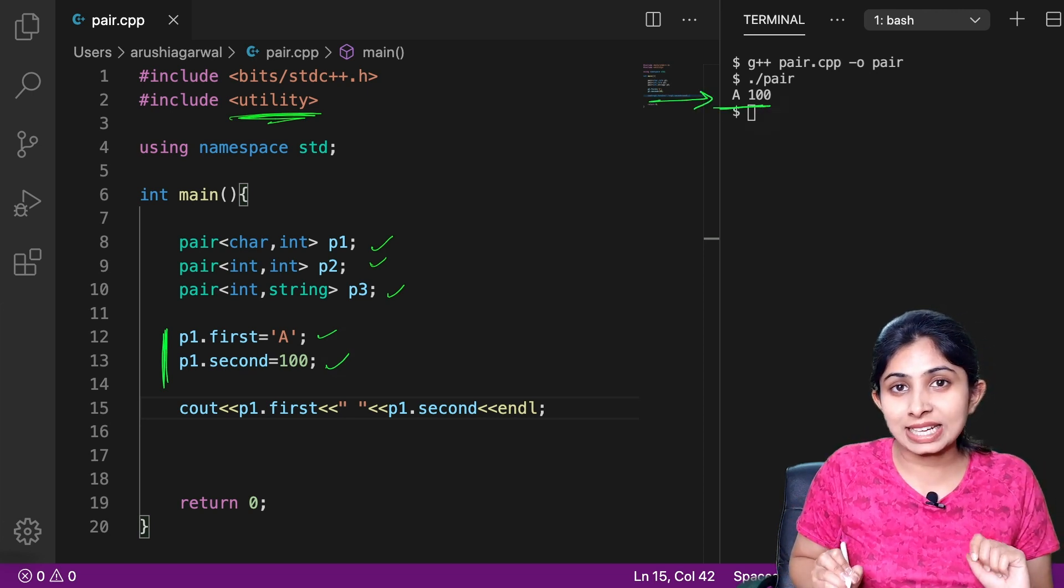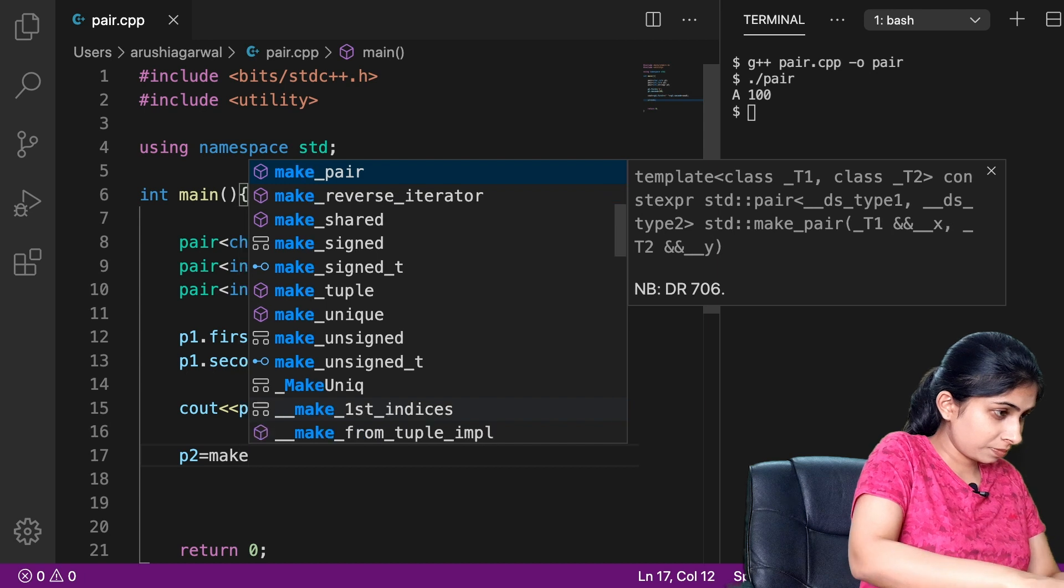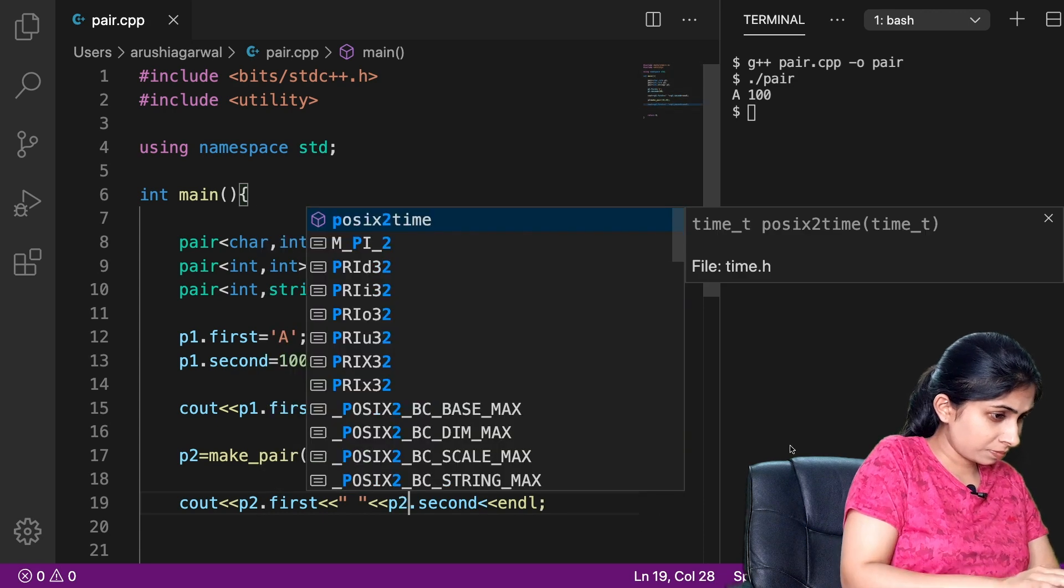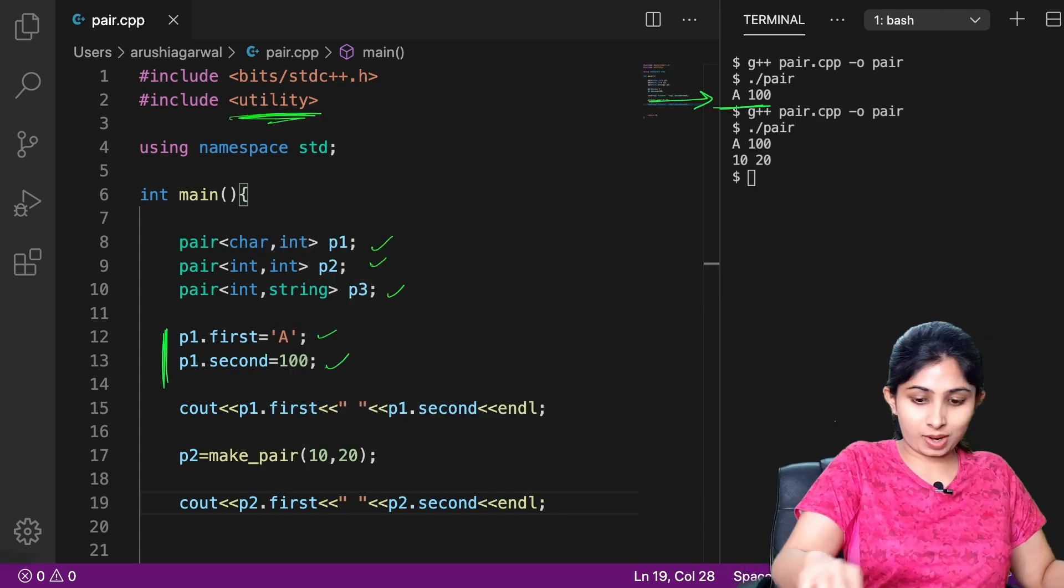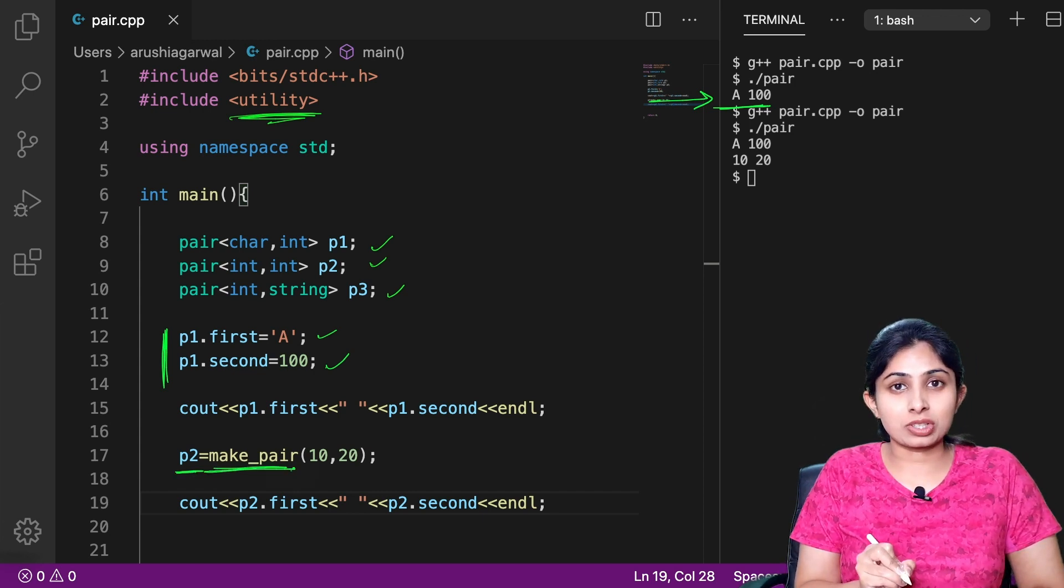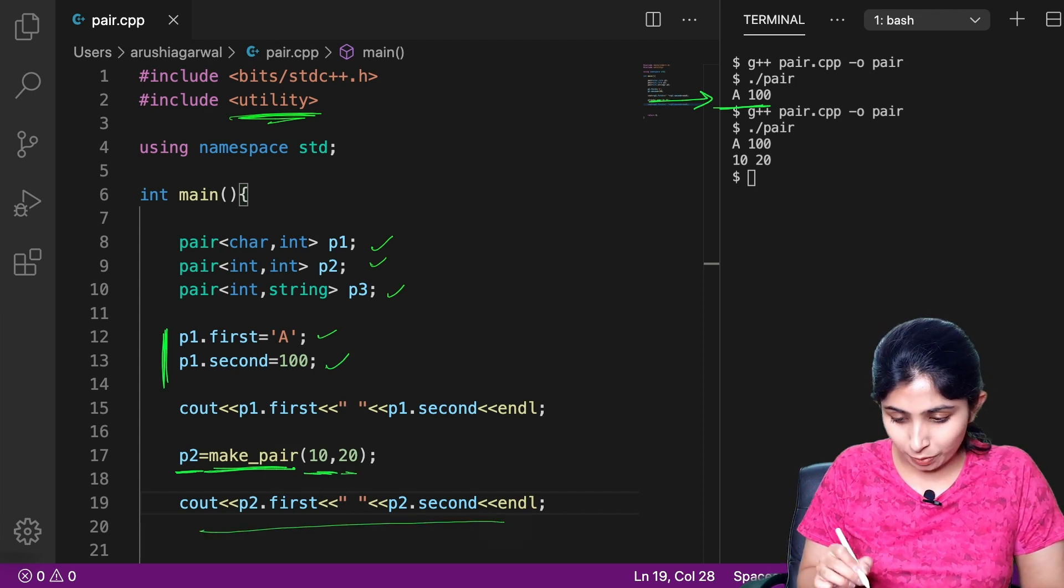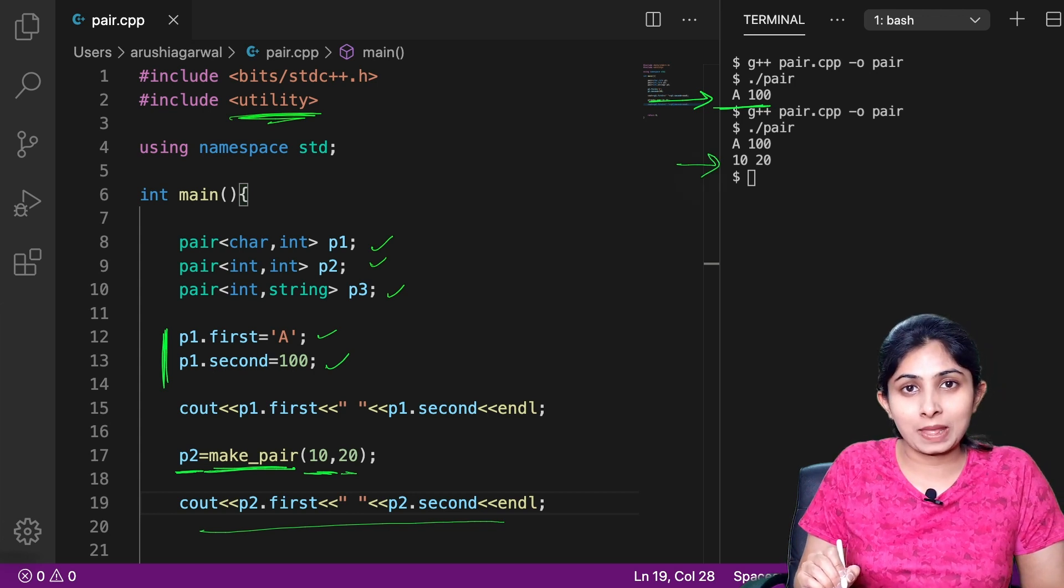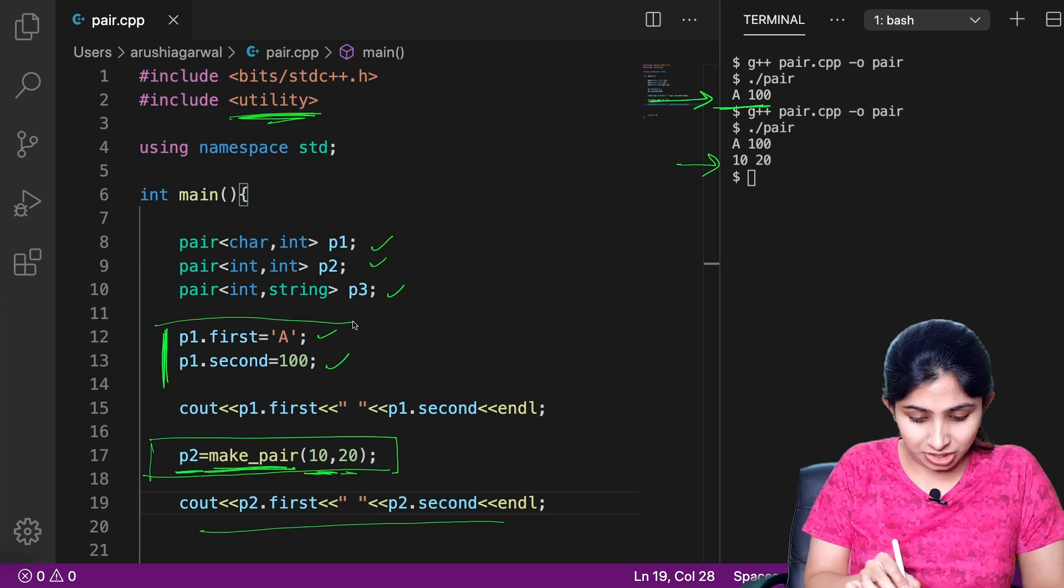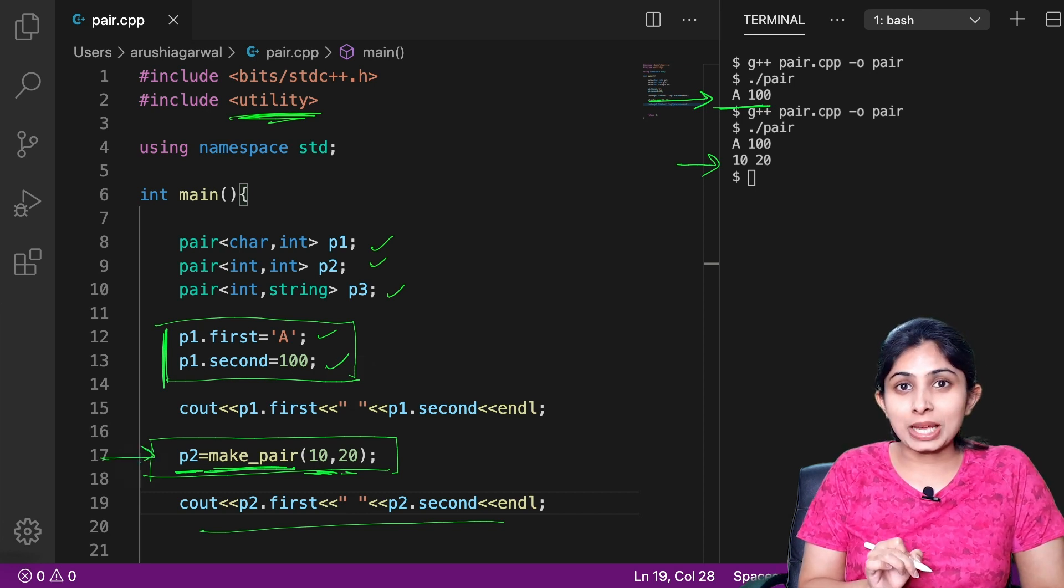Now let's look at the second technique of defining our pair. Here I defined my pair p2 by using the make_pair function and I passed the first and the second element and I got my output for p2 as 10 and 20. So this is the second way of defining my pair. The first way is by initializing the first and the second element and the second technique is by using the make_pair function.